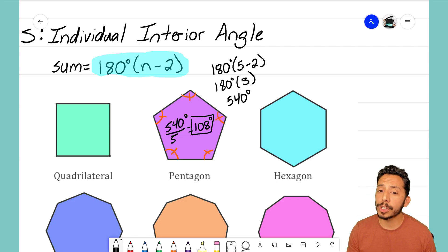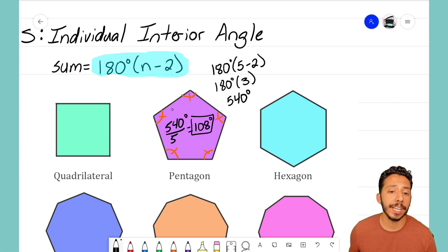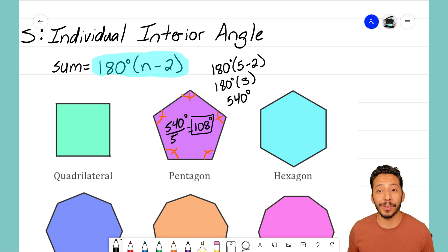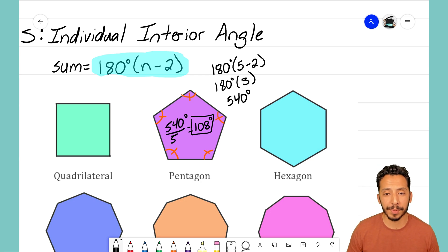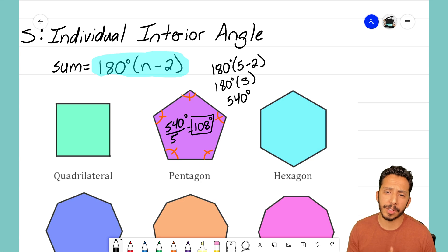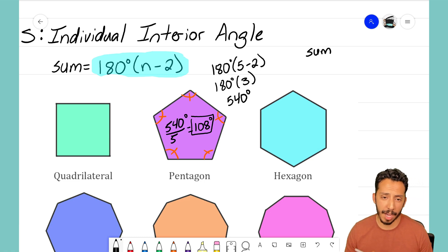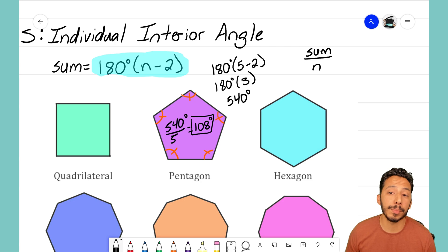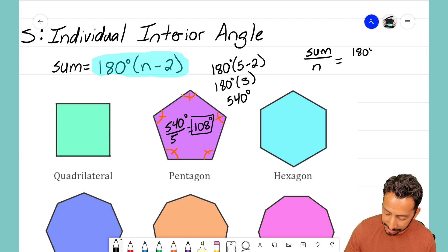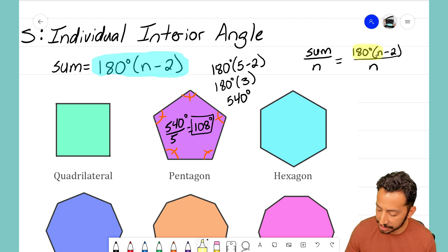Please note this only works for a regular shape. It works because I know those angles inside are all equal to each other. This would not work for a non-regular shape because I don't know if the angles are equal. Only for a regular shape. What this is really boiling down to is that to find the individual interior angle, I need to take the sum of the interior angles and divide it by the number of sides.